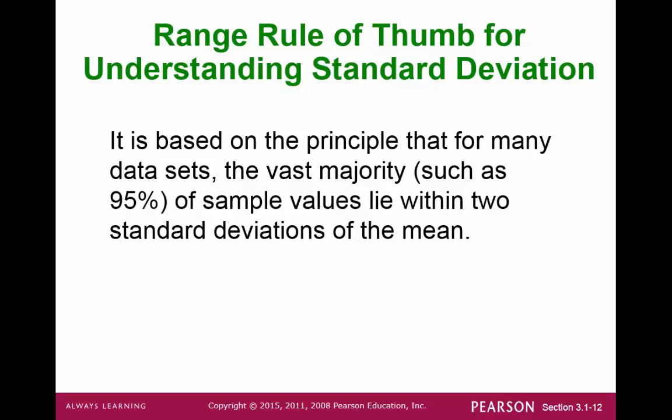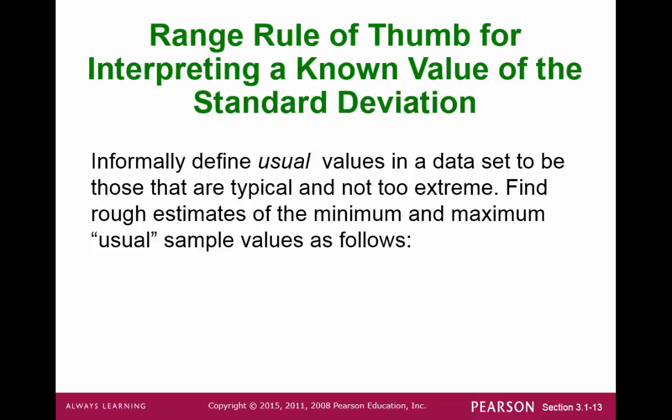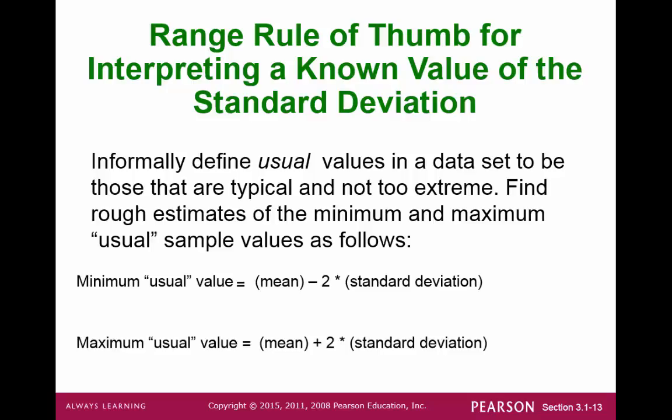The standard deviation can be applied to find the majority of the dataset. Using the range rule of thumb, we can assume that about 95% of the data is within two standard deviations of the mean. If we know the mean and standard deviation of a set, we can find the usual values by starting with the mean and adding and subtracting twice the standard deviation. The minimum value is the mean minus two times the standard deviation, and the maximum value is the mean plus two times the standard deviation.